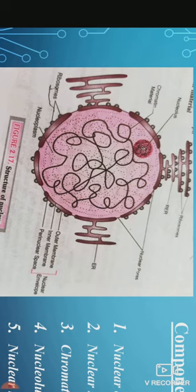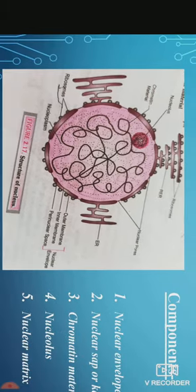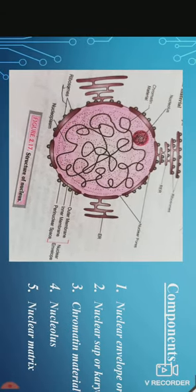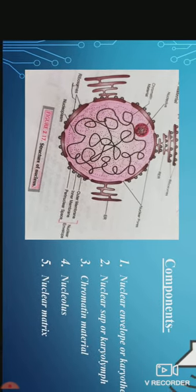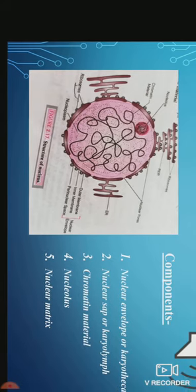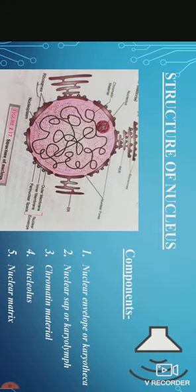Second component is the nuclear sap. It is a clear, non-staining fluid material present in the nucleus, also termed nucleoplasm. It contains raw materials, enzymes, proteins and metal ions for the synthesis of nucleic acids, DNA and RNAs, and ribosomal subunits.